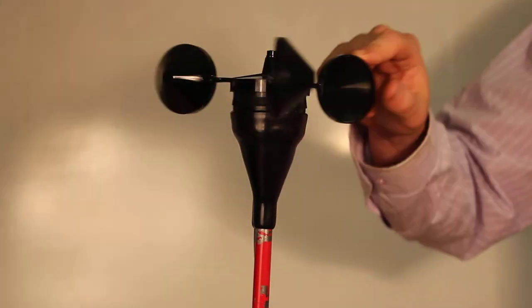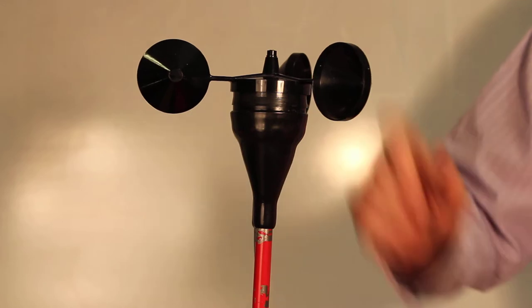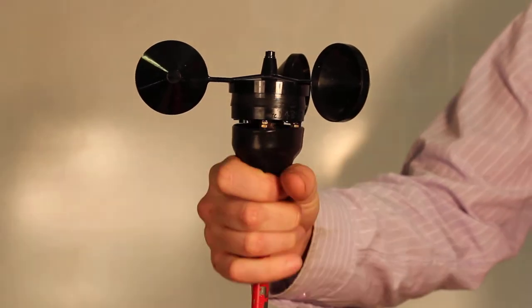The anemometer itself has three cups. In this case, I'm going to show you just the outputs coming from this.